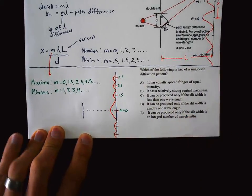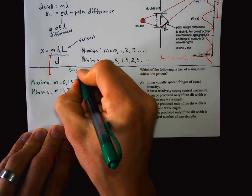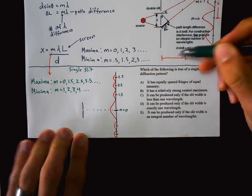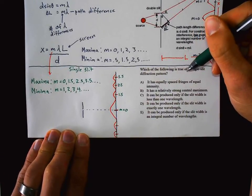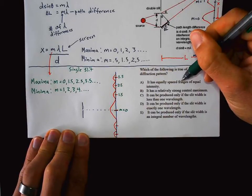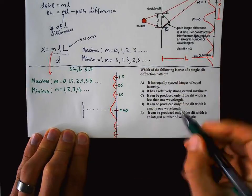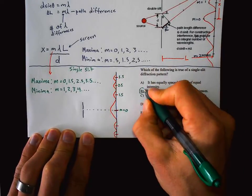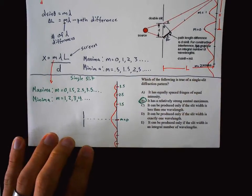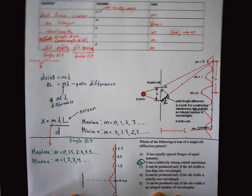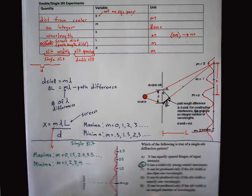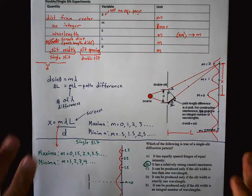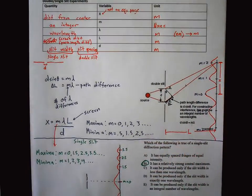Here's a multiple choice problem: which of the following is true of a single slit diffraction pattern? Has equally spaced fringes? No, not equally spaced because of the central max. Has a relatively strong central max? Yes — bingo. These topics show up on FRQs and multiple choice constantly — pretty much every single year.